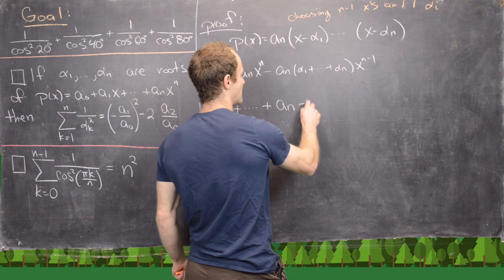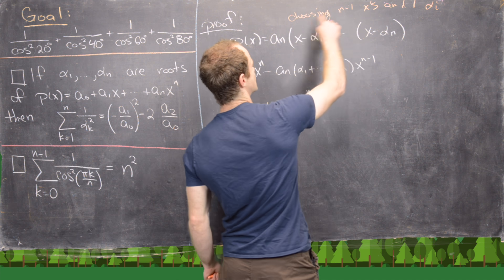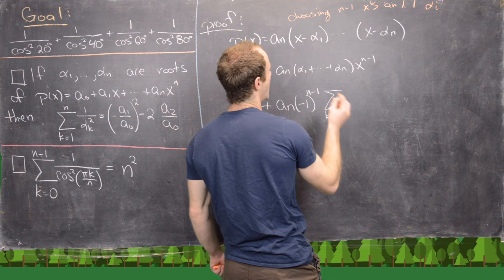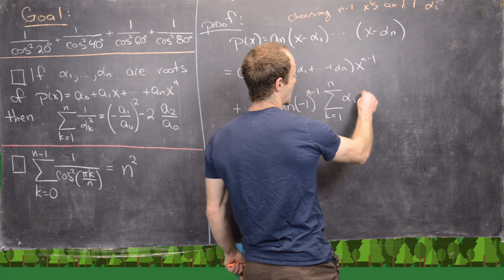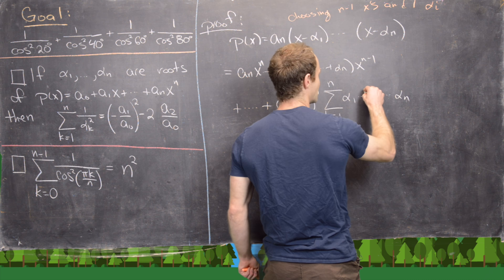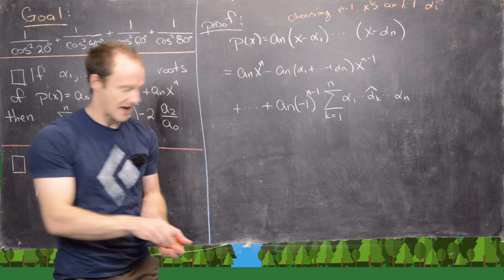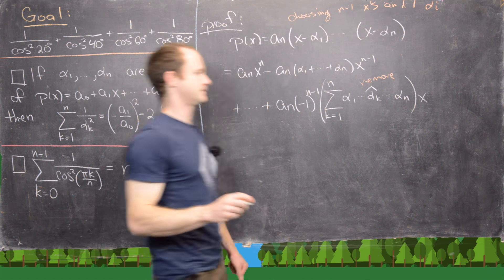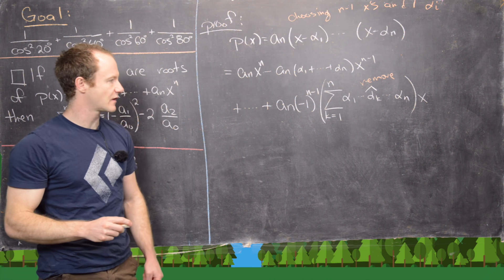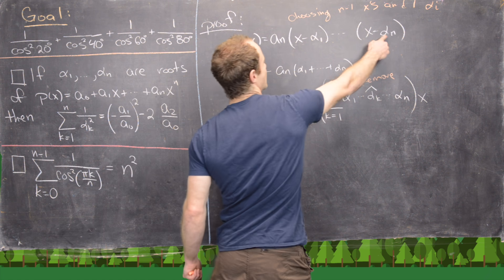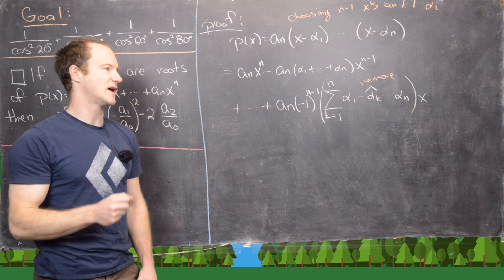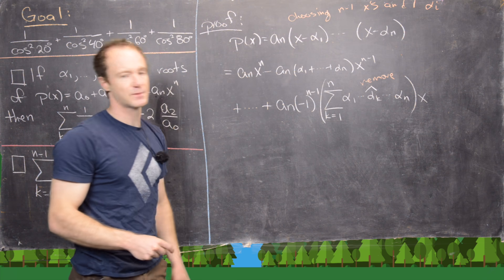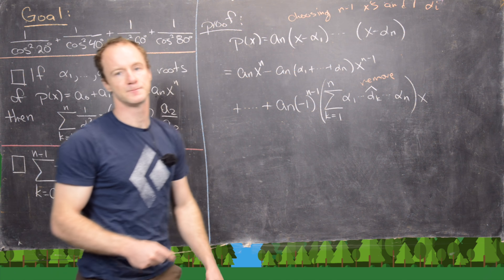The next-to-last term comes from choosing n minus 1 alphas and 1 x. We write that as minus 1 to the (n minus 1) times the sum over k from 1 to n of the product alpha 1 up to alpha n with alpha k removed — denoted with a hat over alpha k — times x. There are n ways to leave one alpha out.